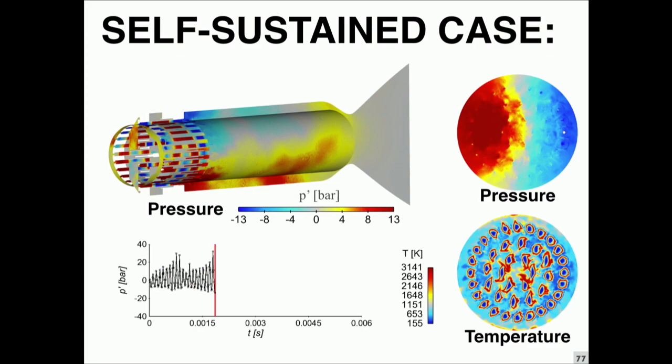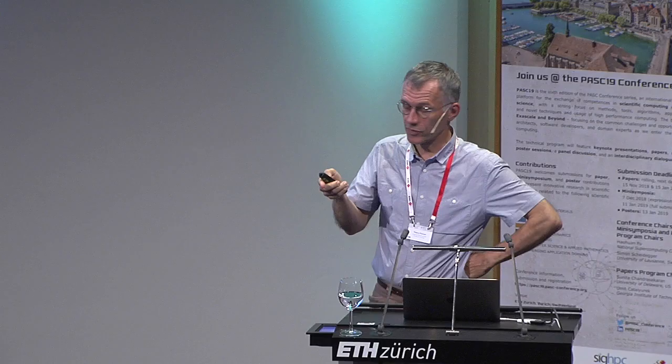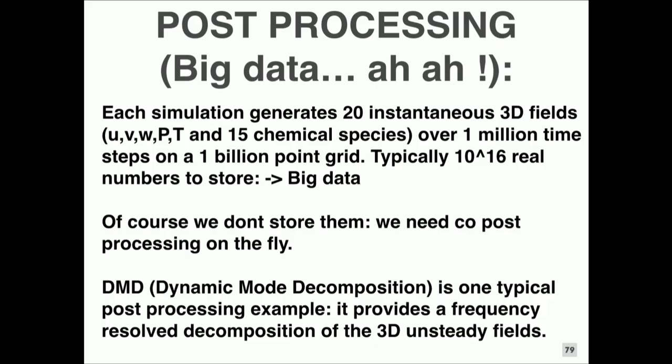That's a usual situation now that we have this big simulation running. The question was: it gives the right results apparently, but how do we analyze it? You can do a pressure spectrum, FFT, and you see that in the LES you capture the two big modes that occur in the experiments. But at each instant we produce 20 fields, they are 3D, the mesh is about 1 billion points, and because we have a time step of 10 nanoseconds, if we want half a second we need millions of iterations. So we generate of the order of 10^16 real numbers and we cannot store them. We do co-processing on the fly, extracting information on a few planes and throwing the rest out.